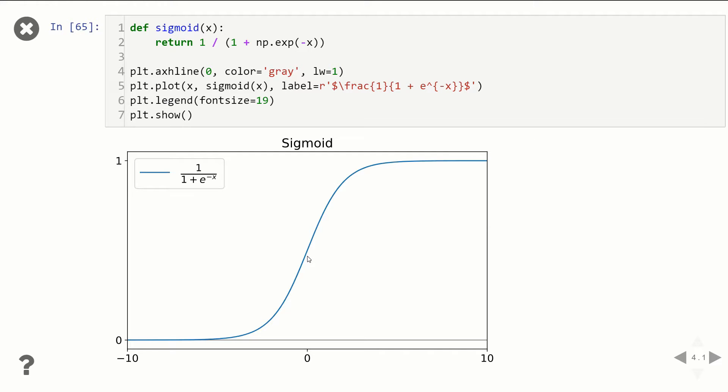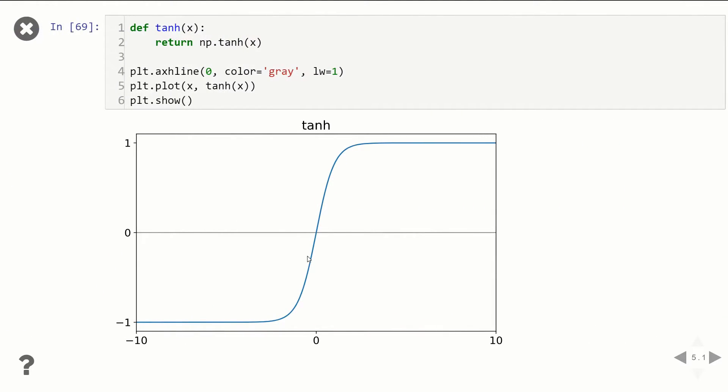That's why the tanH became a more popular activation function. This one has a similar shape as the sigmoid function, but now it's centered at zero. You can see here, it starts at minus one. And then once we get to zero, the output is zero. And then we have a similar curve from zero to one. So this became a more popular activation function.